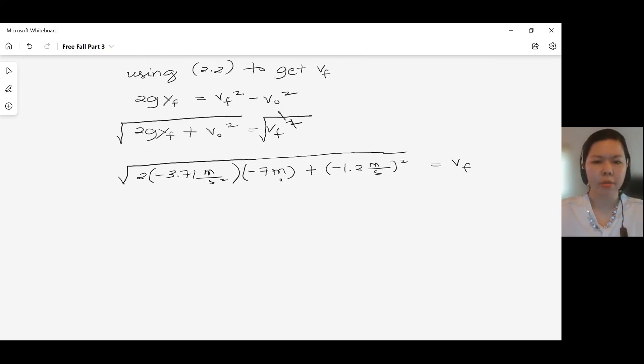Using your calculator to execute this term on the left side, you should get plus minus 7.31 meters per second as our VF. Plus minus because whenever you extract or you get the square root of a number, your answer there is positive and negative. So since the shuttle is traveling downwards, the final velocity now is negative 7.31 meters per second. Therefore VF is negative 7.31 meters per second. Thank you for watching.